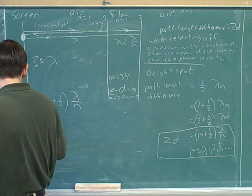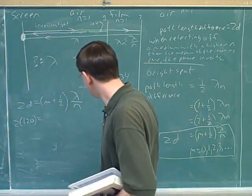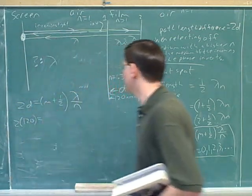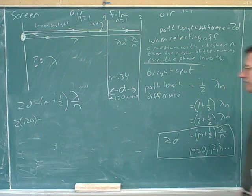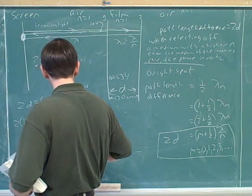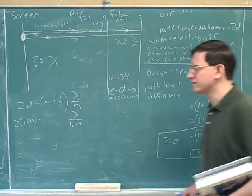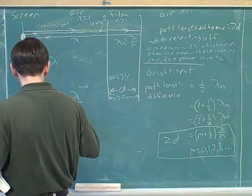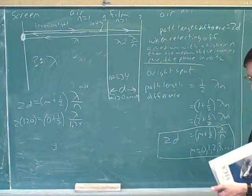All right. Any other numbers that we know that we can plug in? We can plug in for n. Yeah, definitely. So let's plug in n is 1.34. All right. And like I said, m can take on many different values. Let's try plugging in 0 for m. Let's try plugging in 0 for m. And then what would we do?